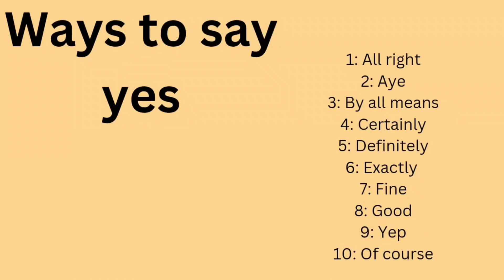Ways to say yes: number one — all right, number two — I, number three — by all means, number four — certainly, number five — definitely, number six — exactly, number seven — fine, number eight — good, number nine — yup, number ten — of course. For example, if someone asks 'Can you come to the party tonight?' you can say: all right, good, fine, exactly, yep, of course — something like that.